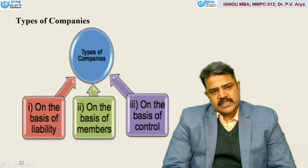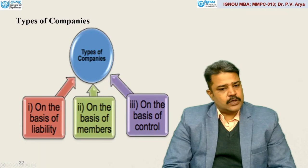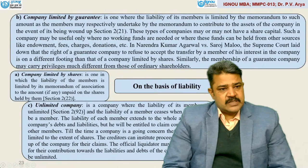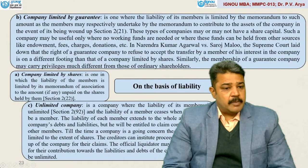A company may be of at least three types — on the basis of liability, on the basis of members, and on the basis of control. On the basis of liability: first, company limited by shares, in which the liability of the members is limited by its memorandum of association to the amount, if any, unpaid on the shares held by them — explained under Section 2, Subsection 22.